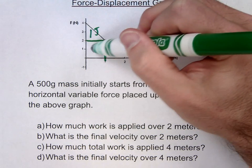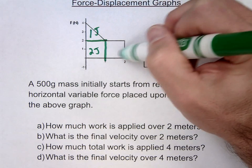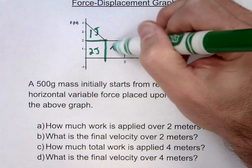This is going to be 2 times 1. That's going to give me 2 joules. And then this region is going to give me 2 joules as well.